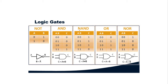Then we have the NAND gate, which is actually NOT-AND. NAND can be read as NOT-AND, which means it is an inverter of AND. The definition of the NAND gate is that the output is going to be low when all the inputs are high. So when all the inputs are one, the output is going to be zero — it is an inversion of the AND gate.